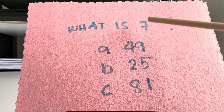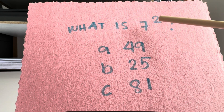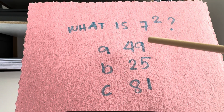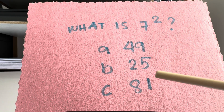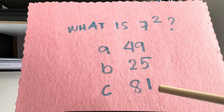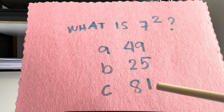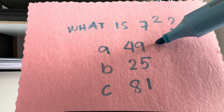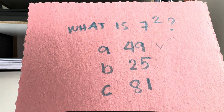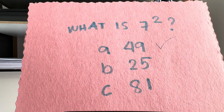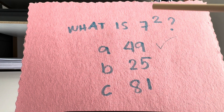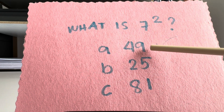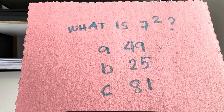What is 7 squared? Is it letter A, 49? Letter B, 25? Or letter C, 81? And the right answer is letter A, 49. 7 squared is equal to 49.